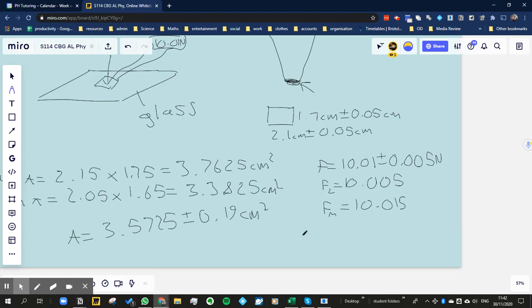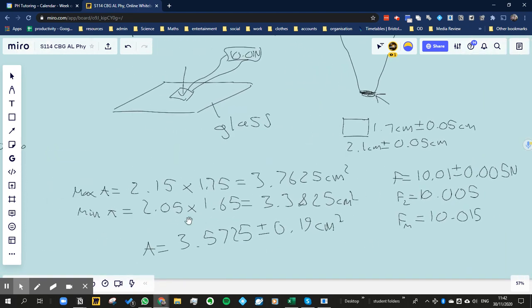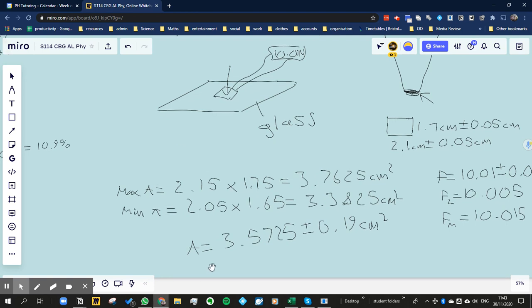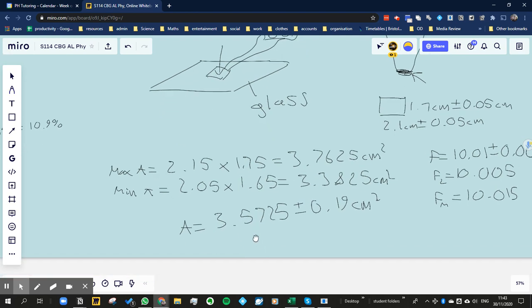So this is how these catch you out. In this case, the maximum area would have been the maximum times the maximum because we're multiplying two maximums. But because we're dividing this time, to get the maximum, you're going to get the maximum divided by the minimum. To get the lowest pressure, you're going to get the lowest divided by the highest.